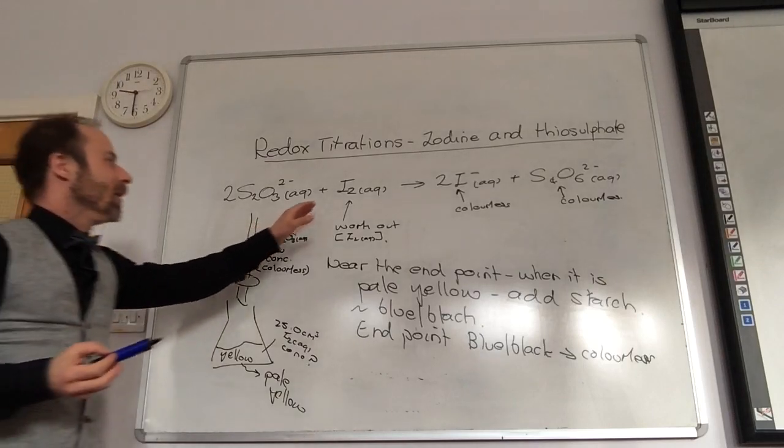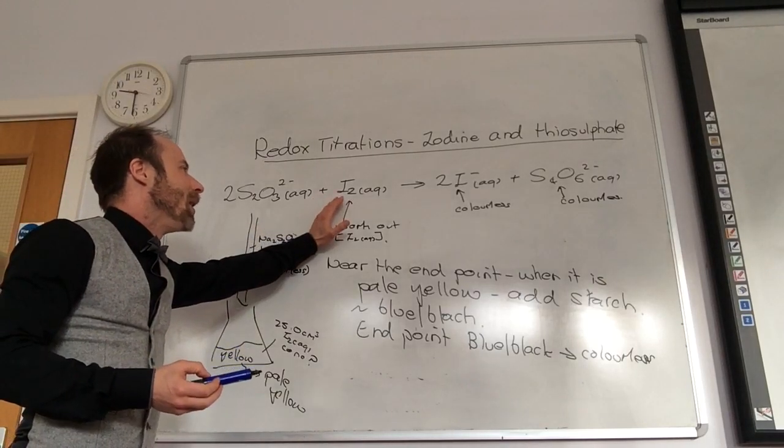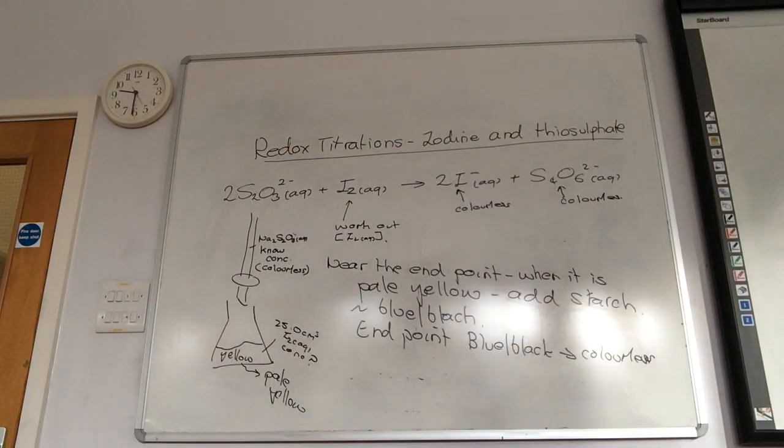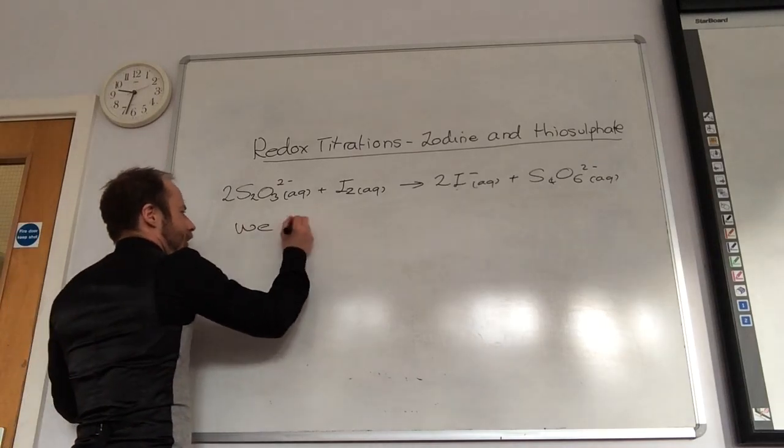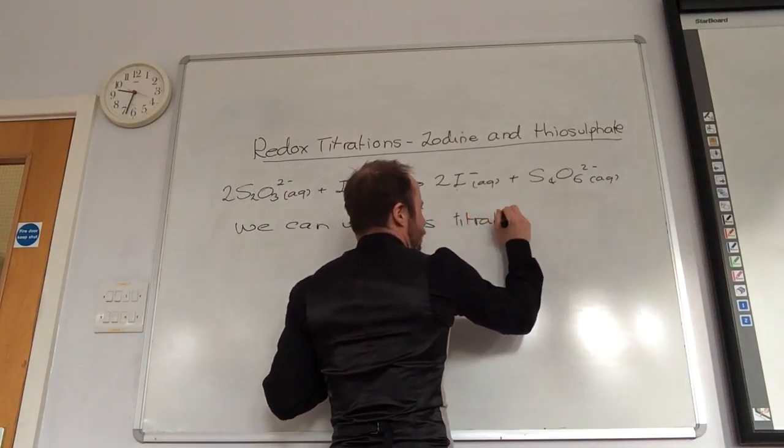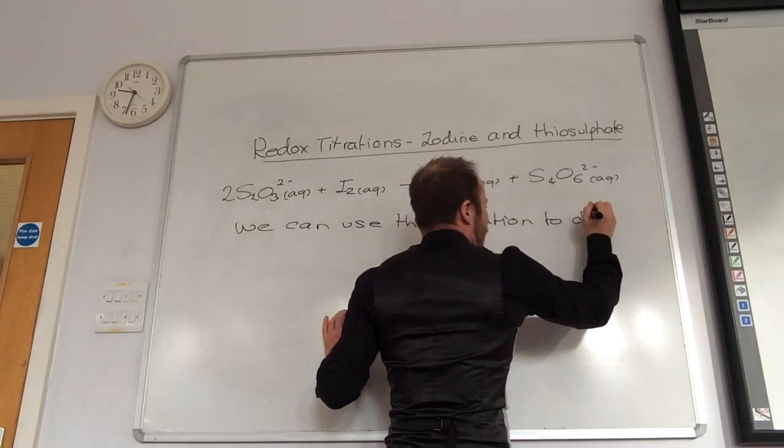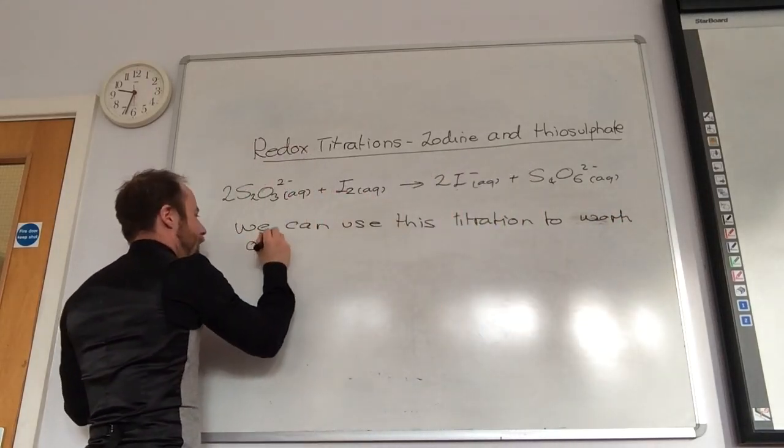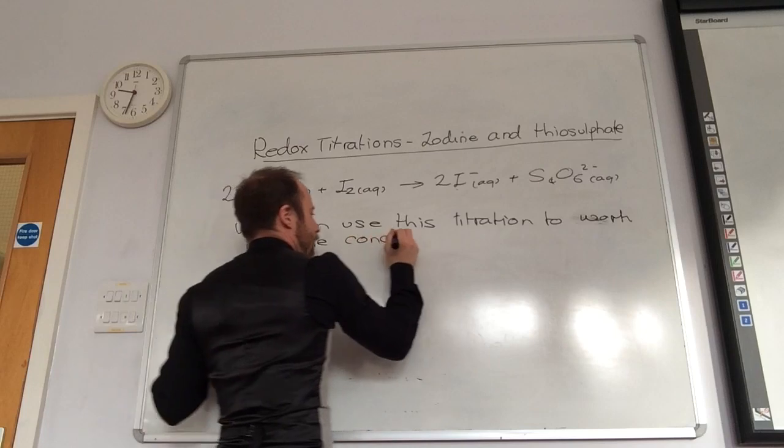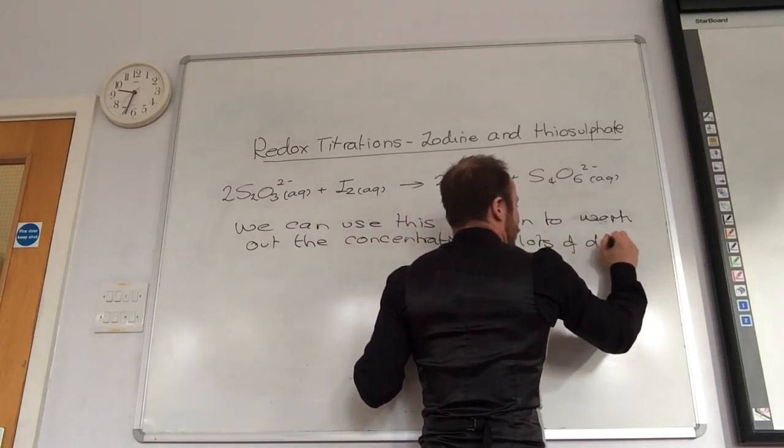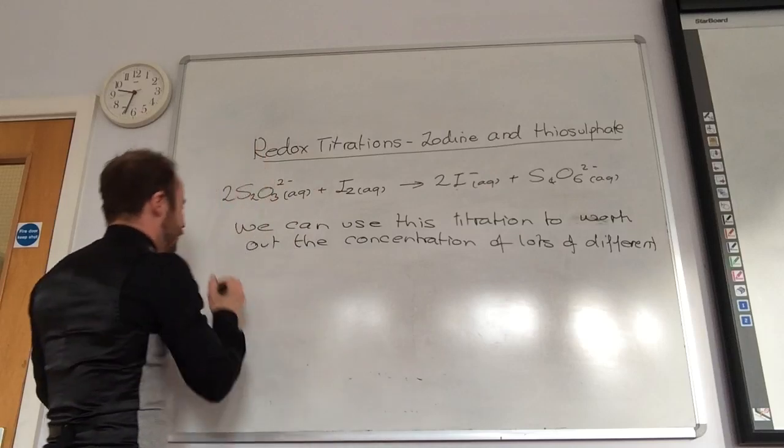What's the point of this? You may think, well, sometimes you want to detect iodine, but not always. Well, you can use this to detect lots and lots of different oxidizing agents, and we're going to look at why now. We can use this titration to work out the concentration of lots of different oxidizing agents.